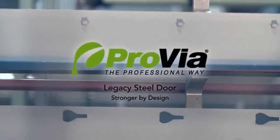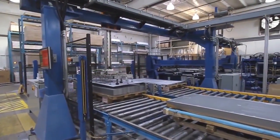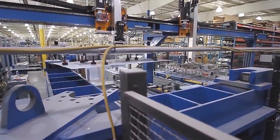At Provia, 20 gauge steel and 20 tabs and slots make all the difference. Our heavy 20 gauge galvanized steel is actually 49% thicker than our competitors' 24 gauge steel.